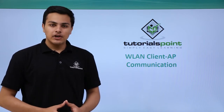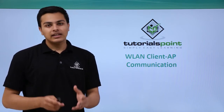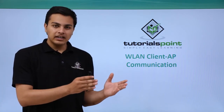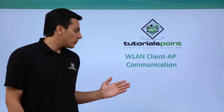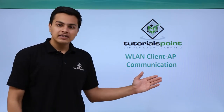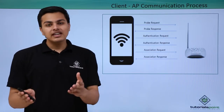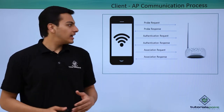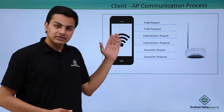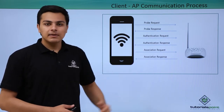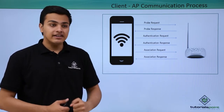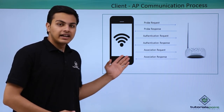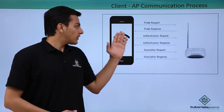Hello everyone. In this video we will talk about how a wireless access point and a wireless client communication takes place. A communication process between an access point and a client is divided into six steps. Looking at this image, you can see here is our client and here is our access point.